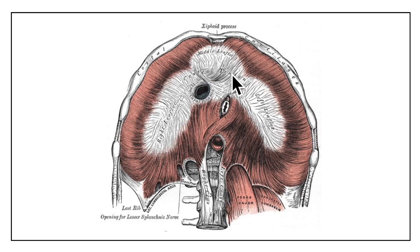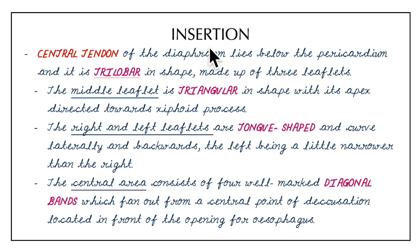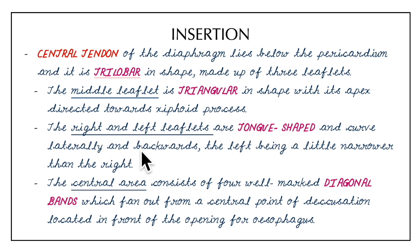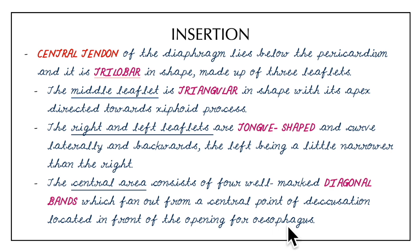The central area consists of four well-marked diagonal bands which fan out from a central point of decussation located in front of the opening for the esophagus. In summary, the central tendon is trilobar with three leaflets; the middle leaflet is triangular with apex towards the xiphoid process; the right and left leaflets are tongue-shaped and curve laterally and backwards, the left being slightly narrower than the right.